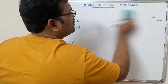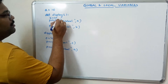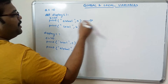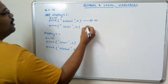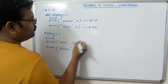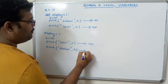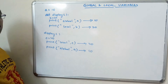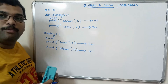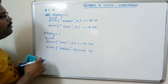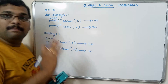In this example, 'a' is a global variable with value 10. 'b' is a local variable for the user-defined function with value 20, and 'c' is a local variable for the main function with value 40. So the output will be: global a = 10, local b = 20, c = 40, and global a = 10.